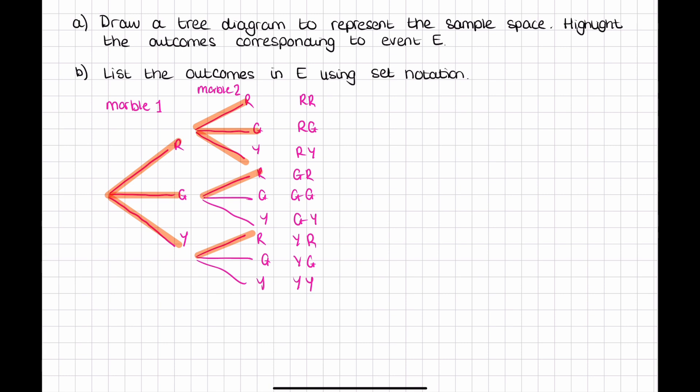When we start working out probabilities with tree diagrams, having all your outcomes written out like that can make it a lot simpler and you're less likely to make a mistake. So that was part A.